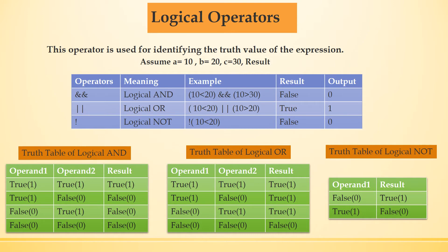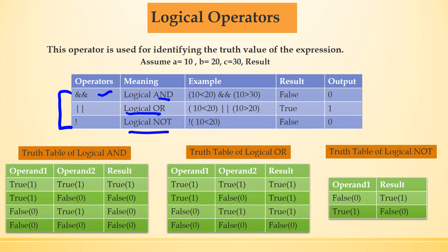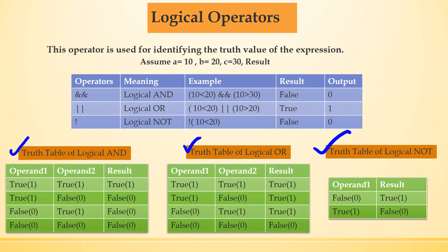Logical operators are used for identifying the truth value of an expression. There are three types of logical operators: logical AND, logical OR, and logical NOT. The results of these operators all depend on the truth table. We have to keep these tables in mind when we are going to use any of the operators in the program. I have assumed variable a = 10, b = 20, c = 30.